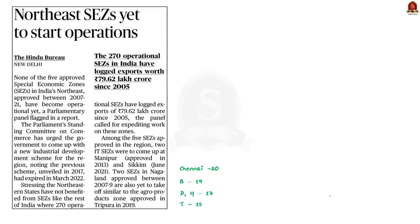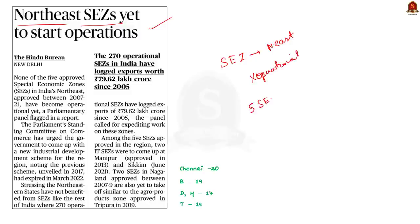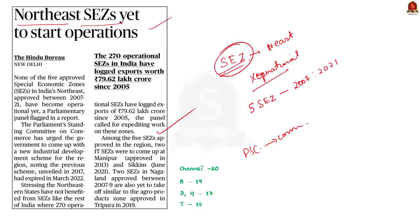Let us move to the next topic. The news is that special economic zones approved in northeastern states have still not become operational. There are 5 special economic zones which were approved between 2007 and 2021 in northeastern states, but none of them are currently operational. This concern was reported by the Parliament Standing Committee on Commerce. In this context, let us understand some points about special economic zones, their types, and the issues associated with them.